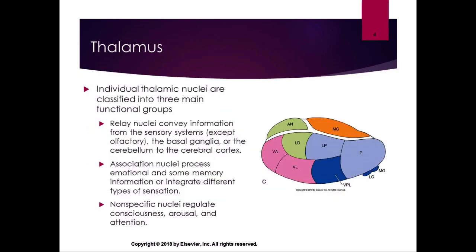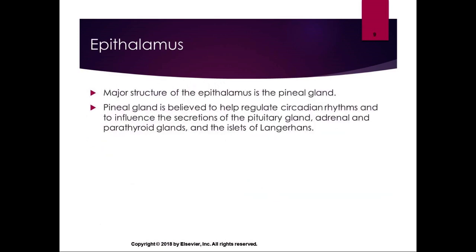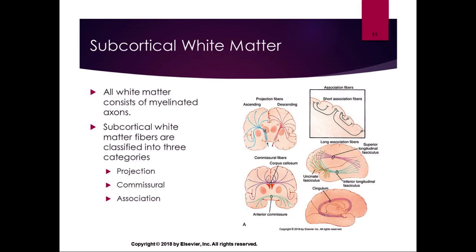Just like everything else in the diencephalon, the subcortical white matter is named by where it is. Subcortical means it's below the cortex. All of the white matter in the subcortical area consists of myelinated axons — that's why it's white. Way back in Chapter 1 or 2, we said white matter is white because it has a lot of fat, and myelin is made of fat. These are all myelinated axons passing information back and forth in the brain.